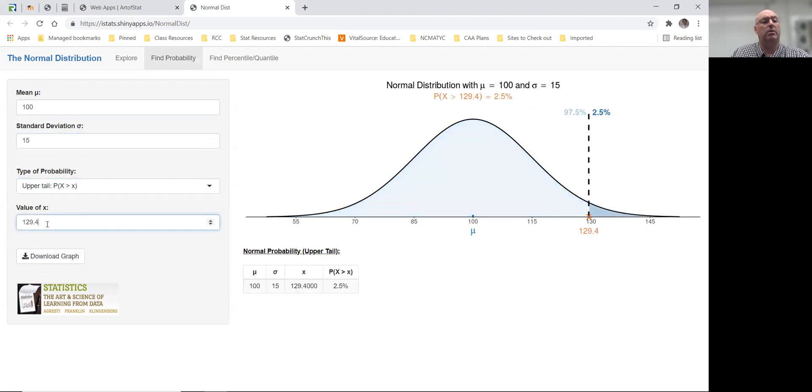And we put in our key value of 120. And we see that only 9.5% of IQ scores are above 120.